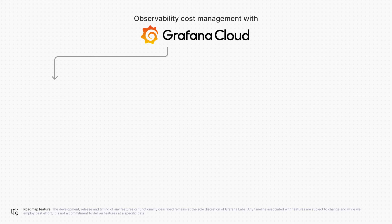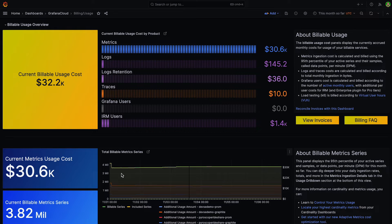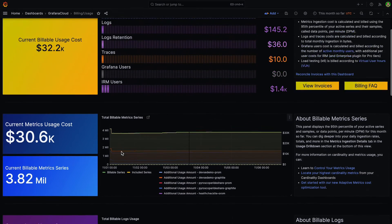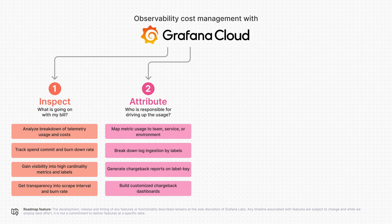Managing spend can mean different things depending on where you are in your observability maturity and scale. For instance, you might just want to inspect your observability bill to understand monthly spend, track usage, or keep checks on your burn rate. Or, for some organizations, scaling observability as a service and creating accountability around costs for different teams could be valuable — being able to answer which team is responsible for a spike in usage and attributing usage to a service or application can help create showback or chargeback policies.